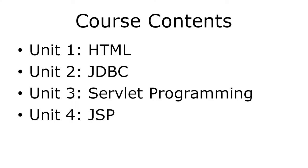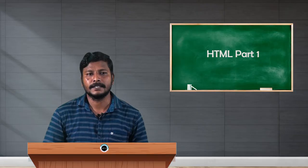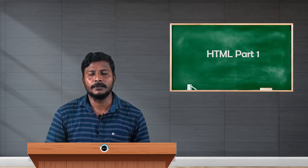The course contents are divided into four units. Unit one is for HTML, unit two is for JDBC — that is Java Database Connectivity, unit three is for server programming, and unit four is JSP. Units three and four are for dynamic web designing, and unit two, JDBC, is for database connections using Java.